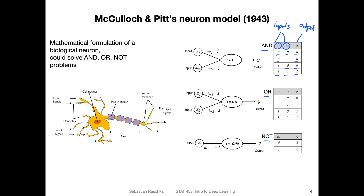For the OR function, it's sufficient for one of the inputs to be one to output a one. And the NOT function is the inverse — if the input is zero, then the output is one, and if the input is one, the output is zero. So here we are talking about binary values; the possible values are only zeros and ones, like representing one bit of information.